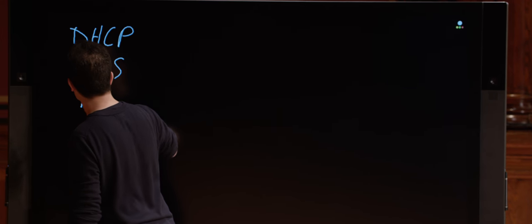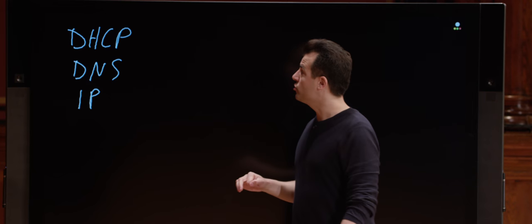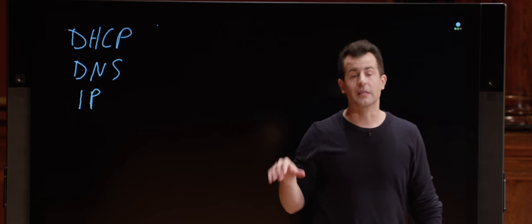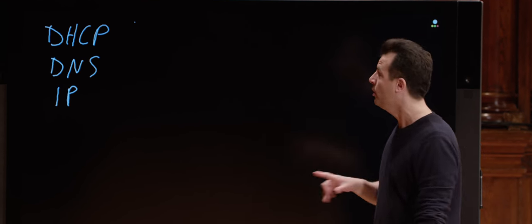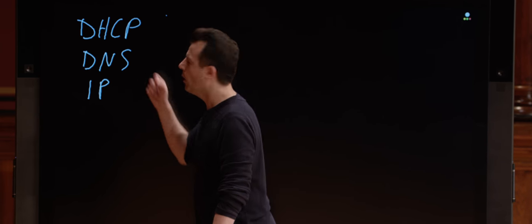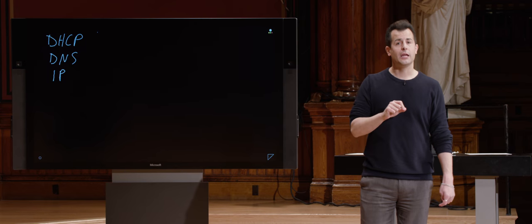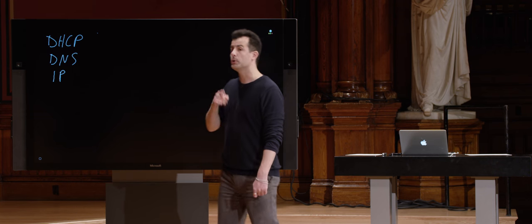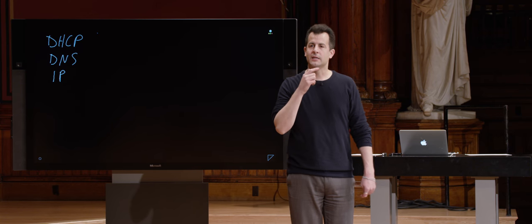Just to recap: every computer has an IP address, which typically comes from a DHCP server within your ISP or your home. There are also DNS servers, controlled by your ISP, that convert domain names to IP addresses — so that when you try to go to facebook.com, your computer, whether Mac, PC, iPhone, or Android, knows what the actual IP address is.